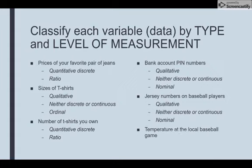The temperature at the local baseball game. Temperature is something we measure, so it's going to be numbers. And since we're measuring, it would be quantitative continuous, and it's either going to be at the interval or ratio level – thinking about what zero means. Zero degrees does not mean no temperature, so it's at the interval level.